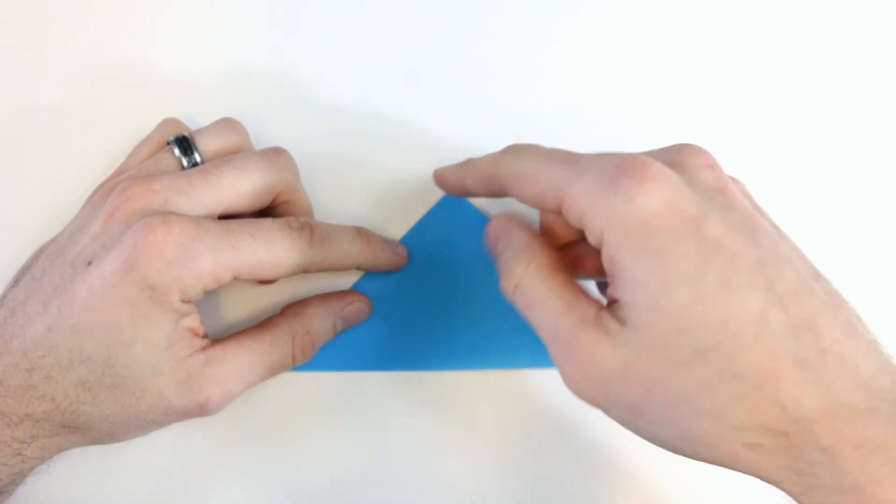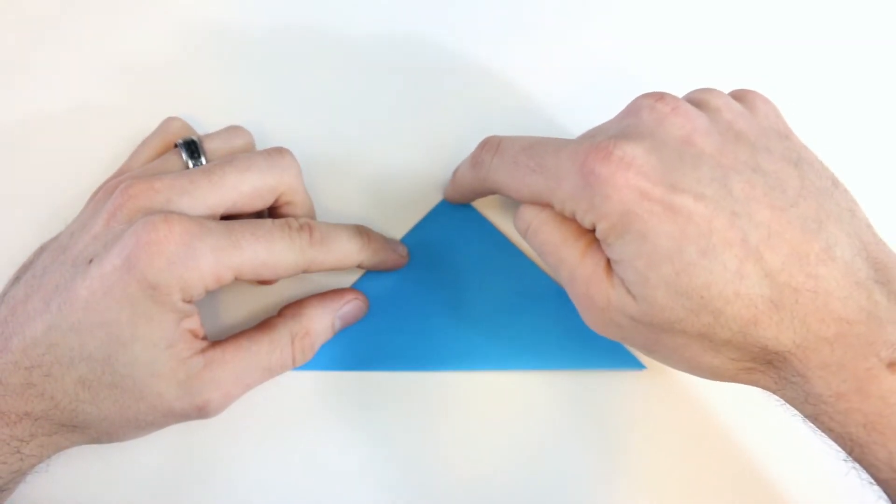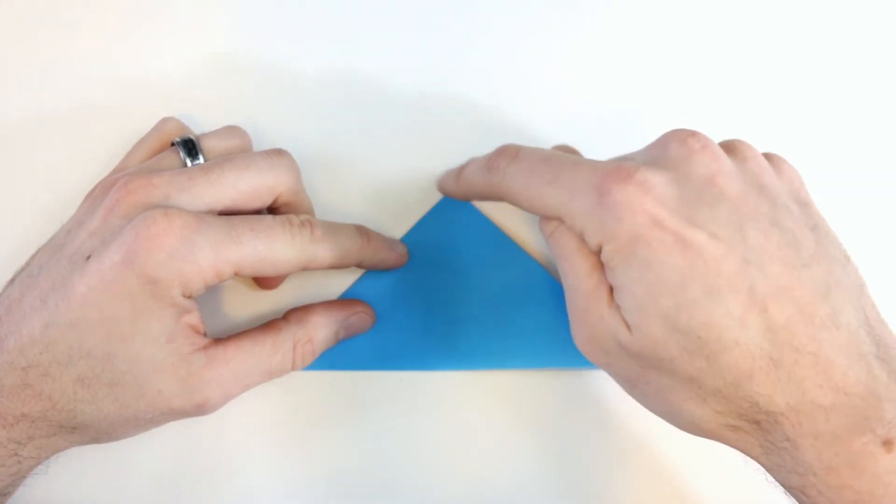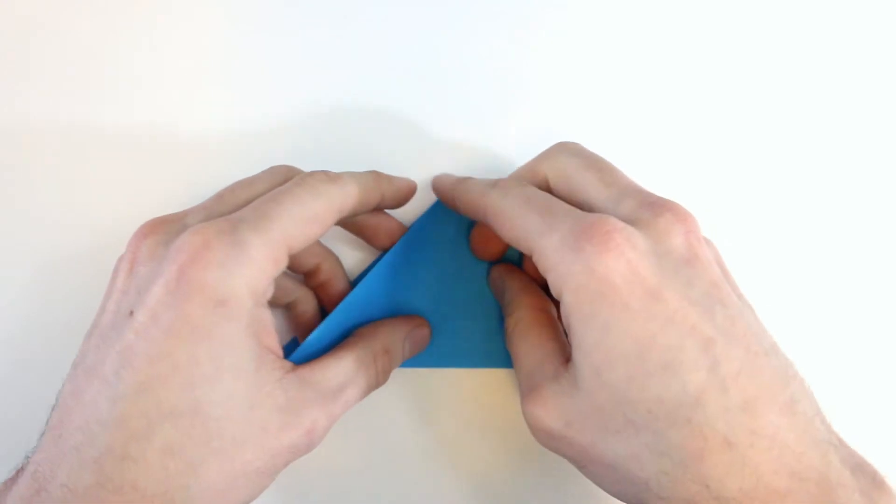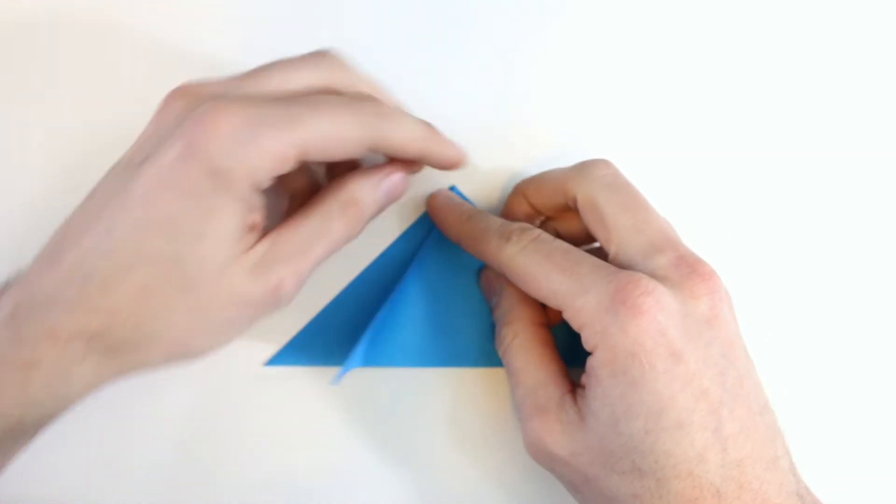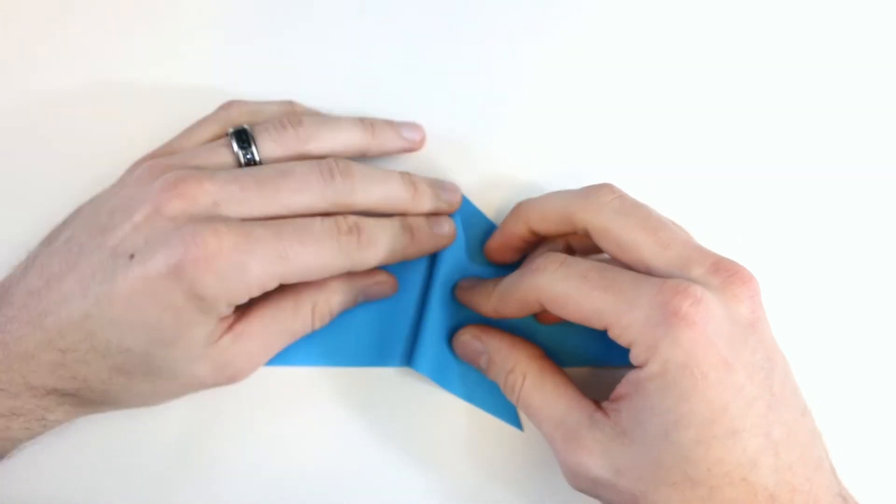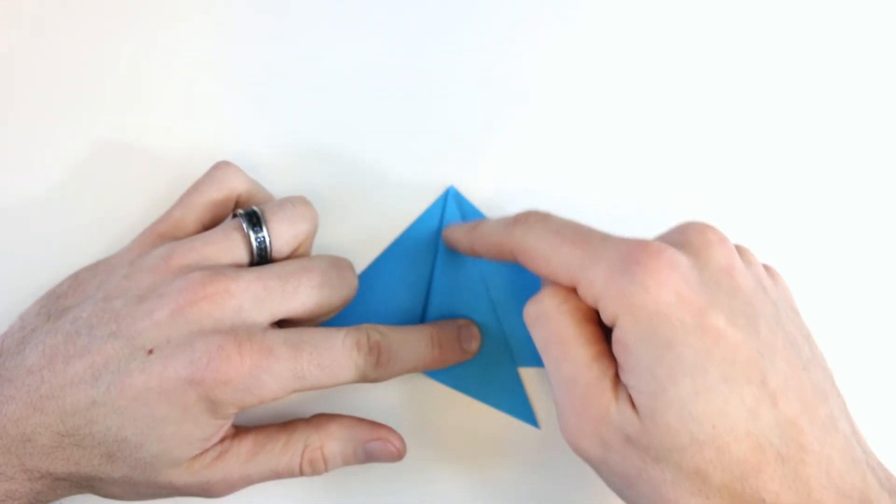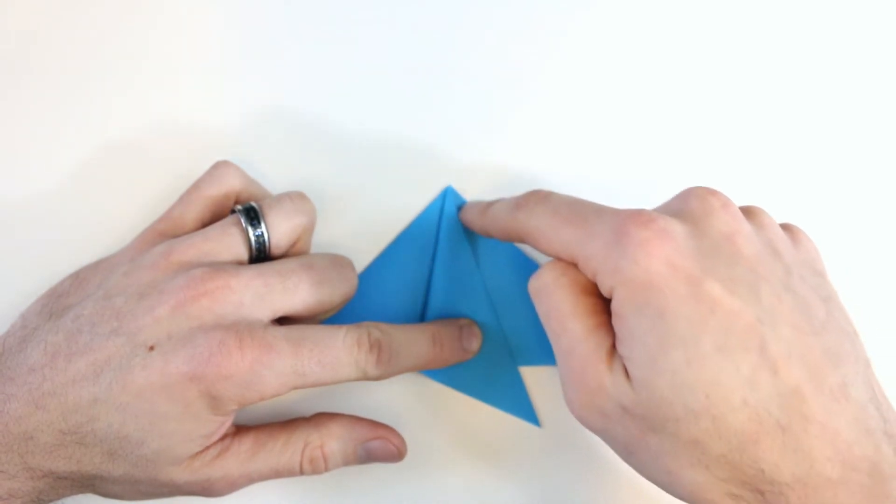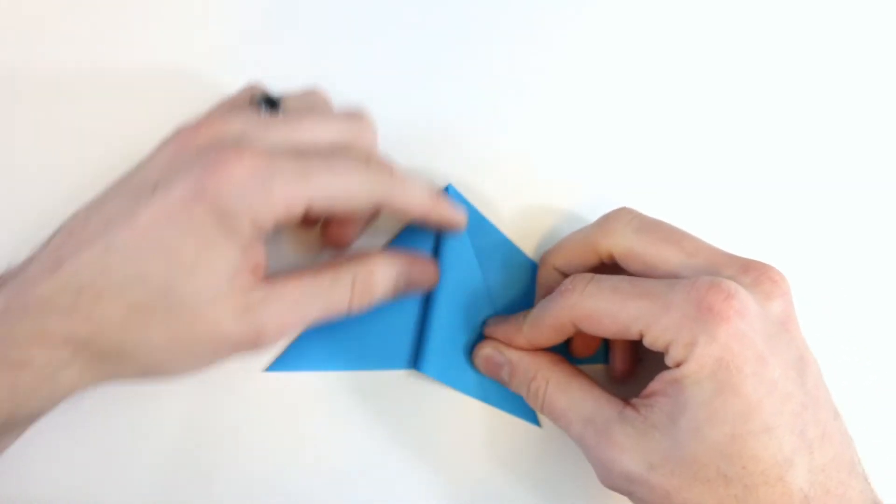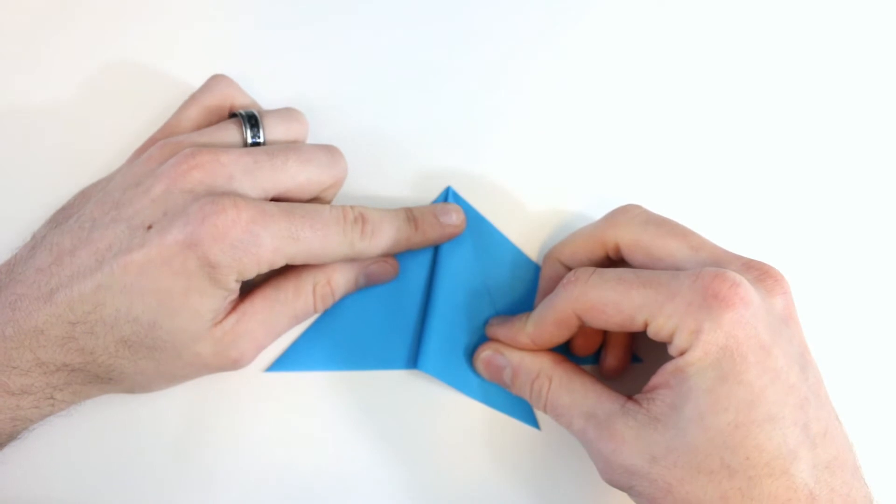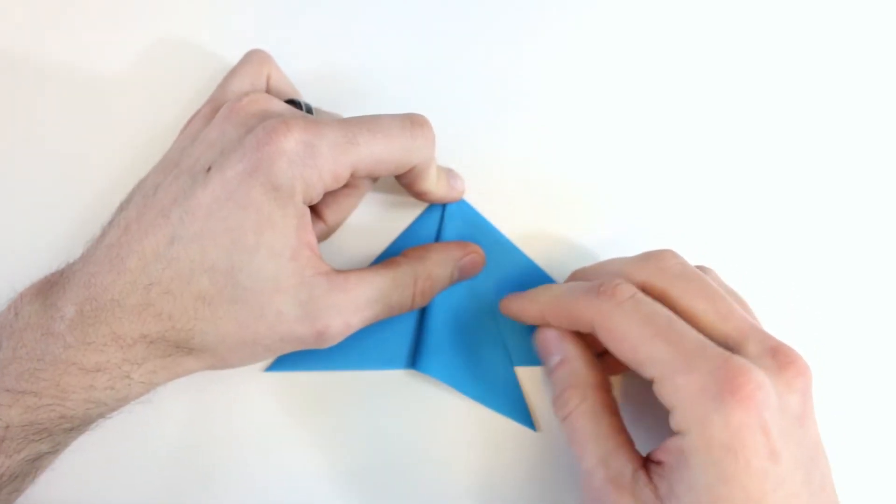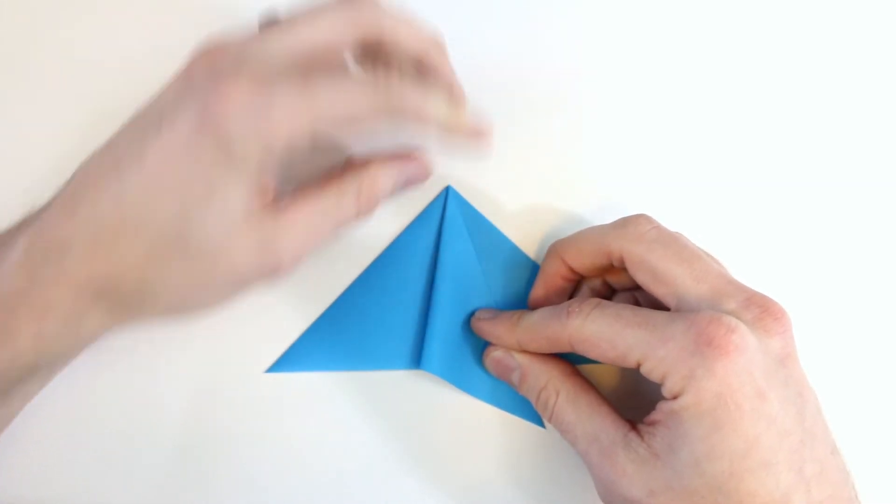Next we're going to make a valley fold that starts at this top point and runs down this way. And it's actually going to trisect this angle. So we'll bring this over and valley fold it. Try to get it into thirds so that this is the same size as this. And it's okay if it's not perfect on the first try. Just make sure it starts from this top point. I'm going to fold it a little bit too far on the first one just to show you how to fix it.